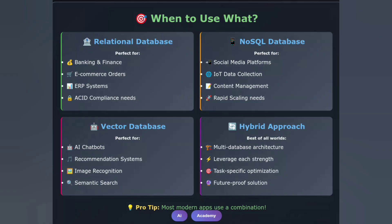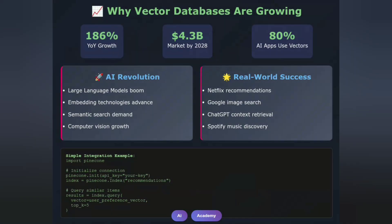NoSQL is perfect for social media platforms, IoT data collection, and content management systems. Choose vector databases when building AI-powered applications that need semantic search capabilities, working with embeddings and similarity, or building recommendation systems. Perfect for AI chatbots, recommendation engines, image recognition, and semantic search.